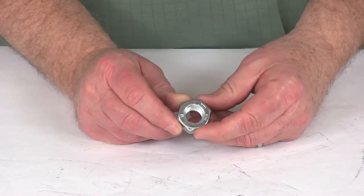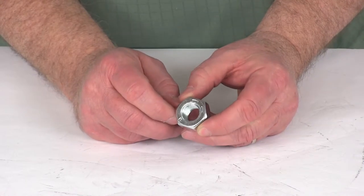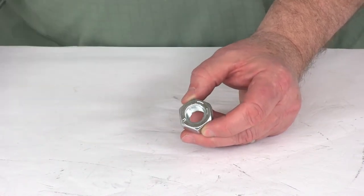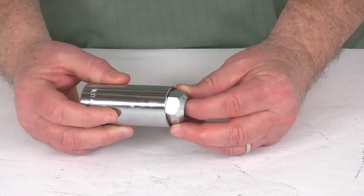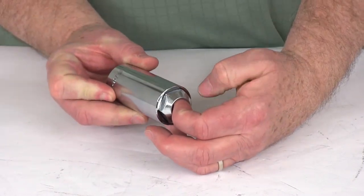Now this head size or outer diameter is 1 and 1 sixteenths or 27 millimeters. Just to show you, we happen to have here a 27 millimeter deep weld socket. And as you can see, fits perfectly onto the head of the nut.